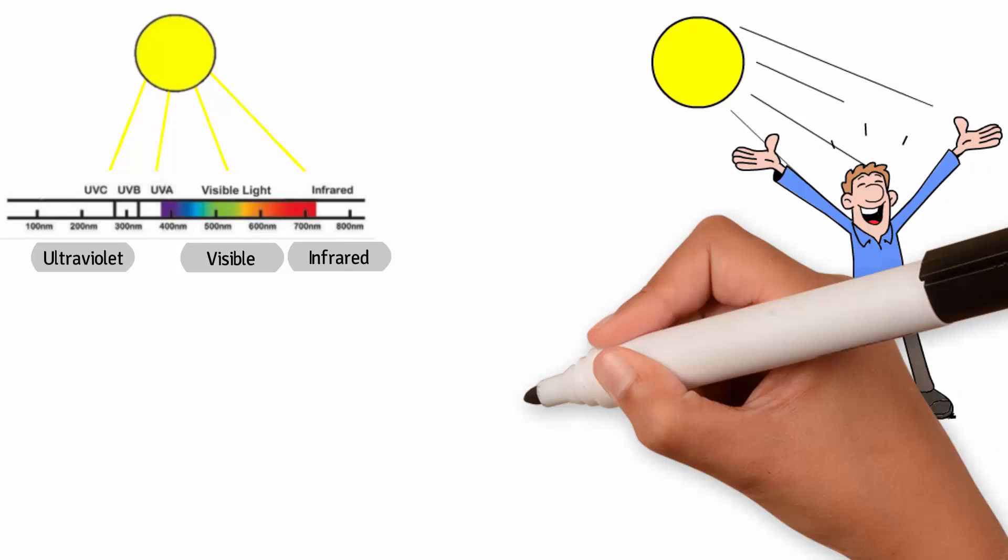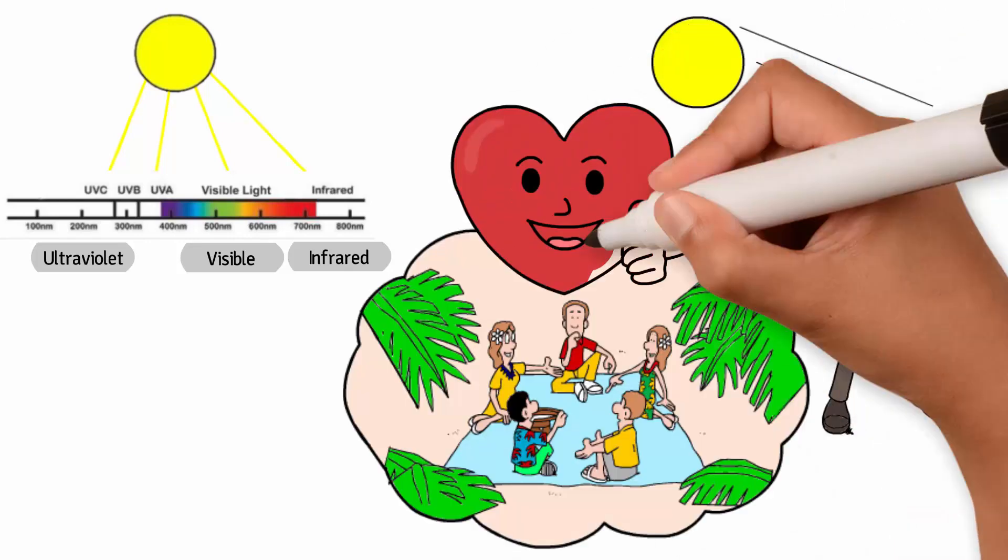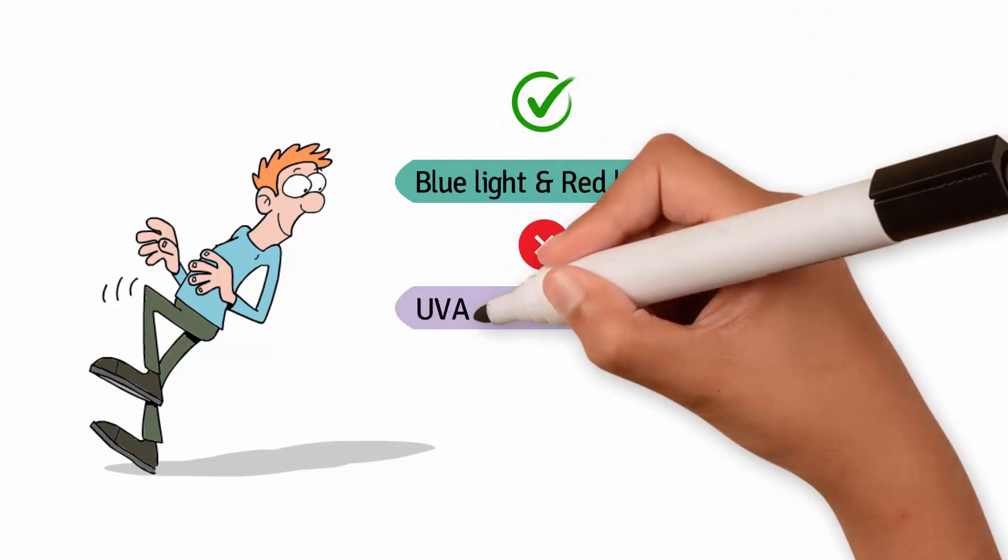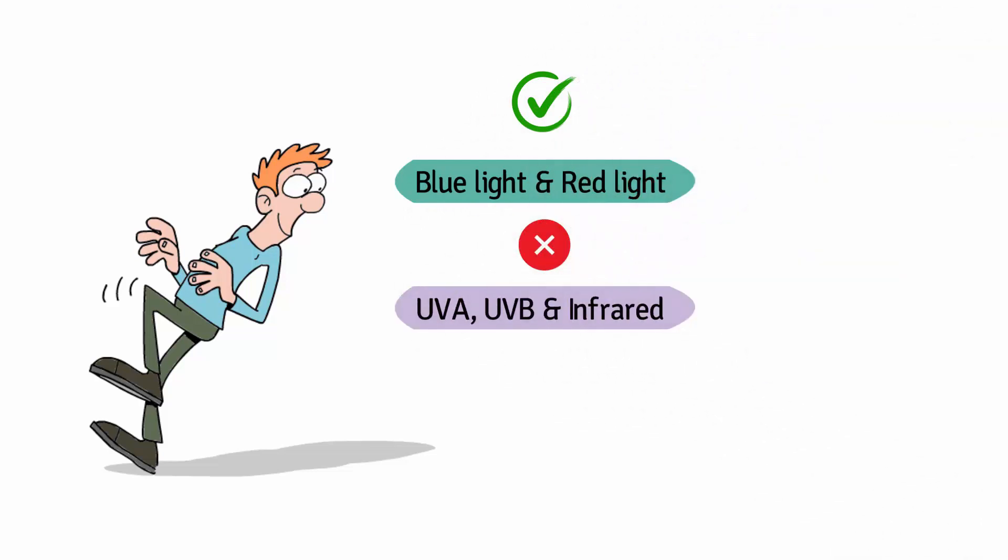Exposure to each of these wavelengths have different positive health effects on our bodies. We see wavelengths like blue light and red light, and some we can't, like UVA, UVB, and infrared.